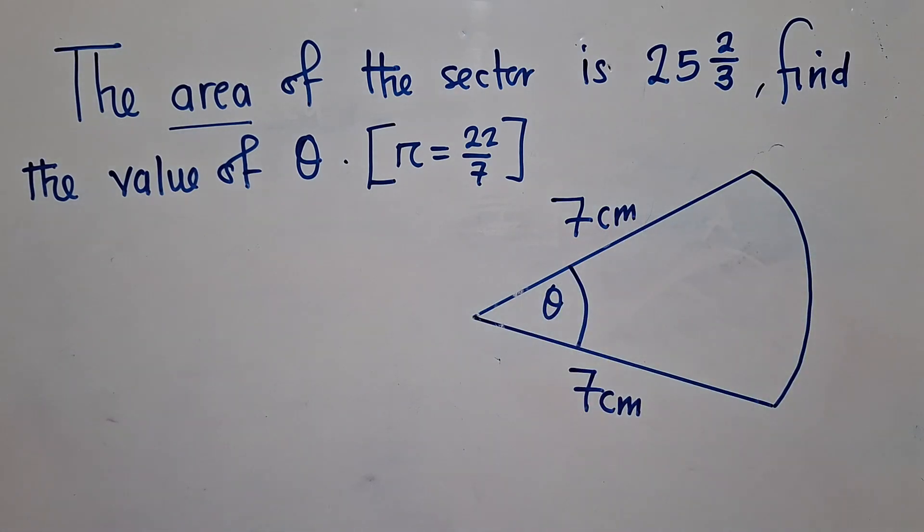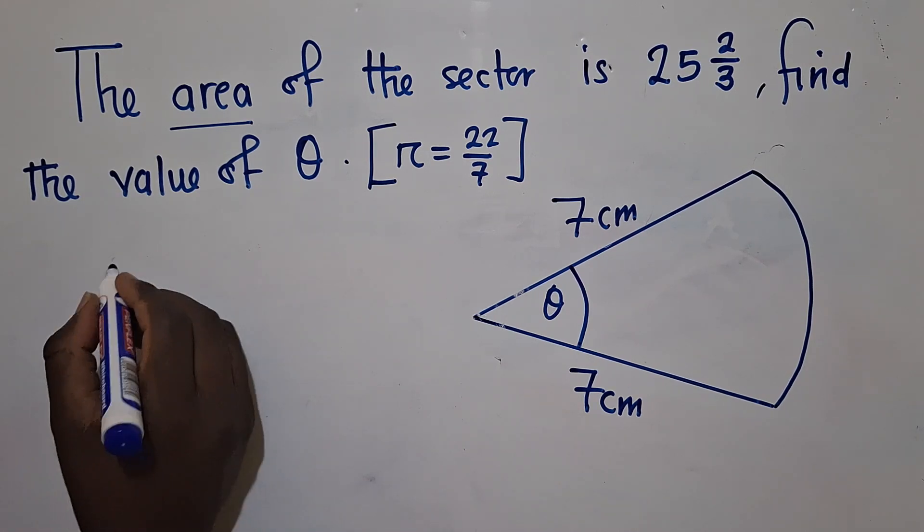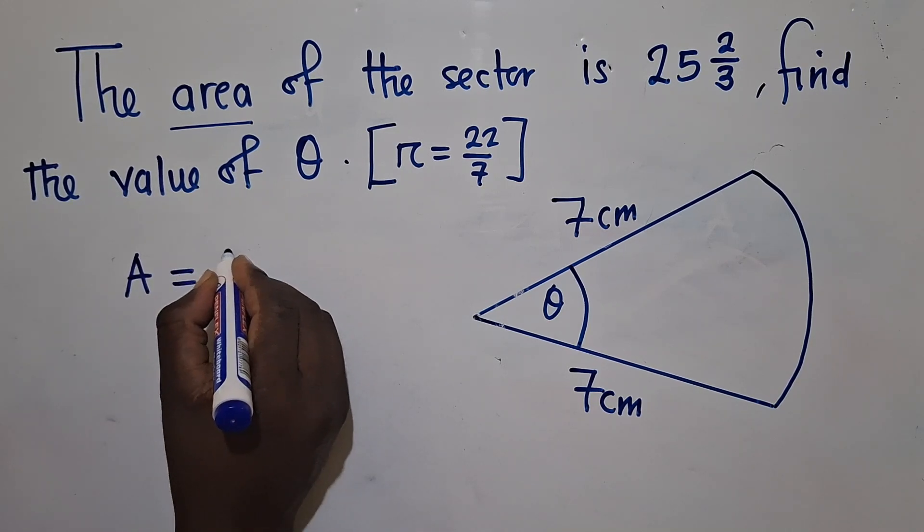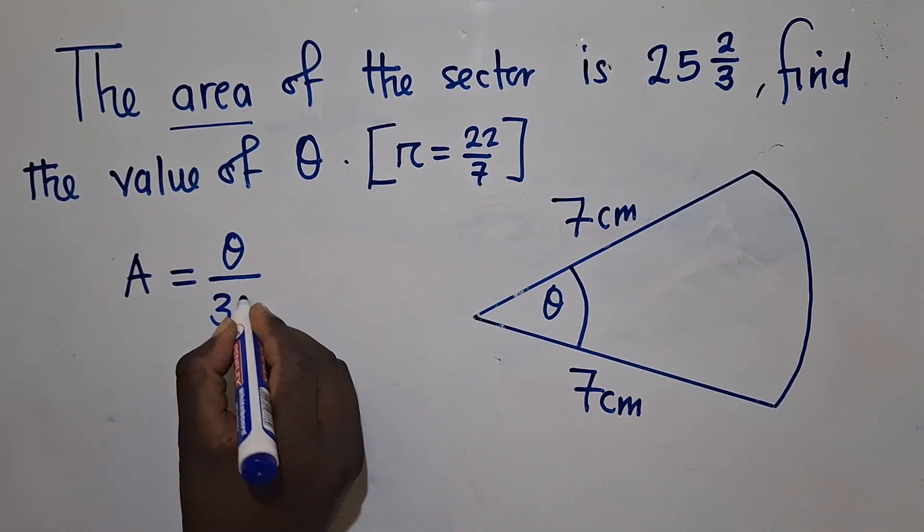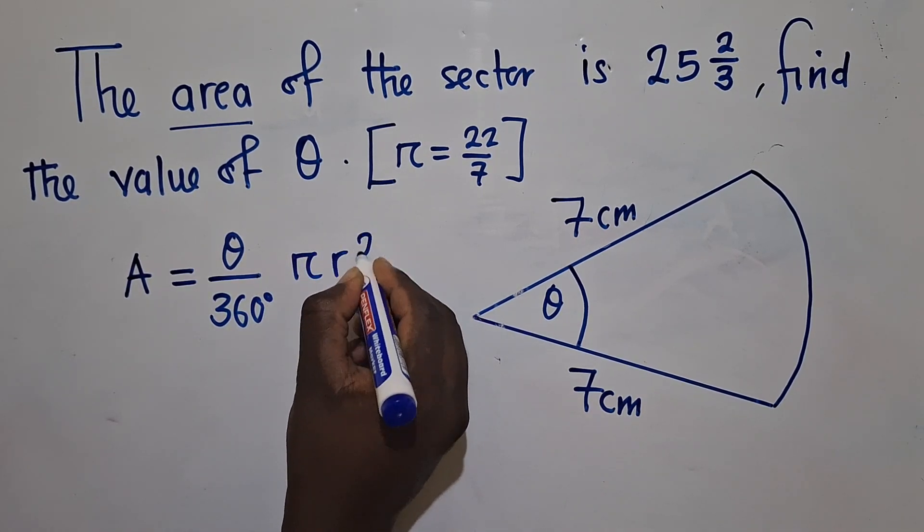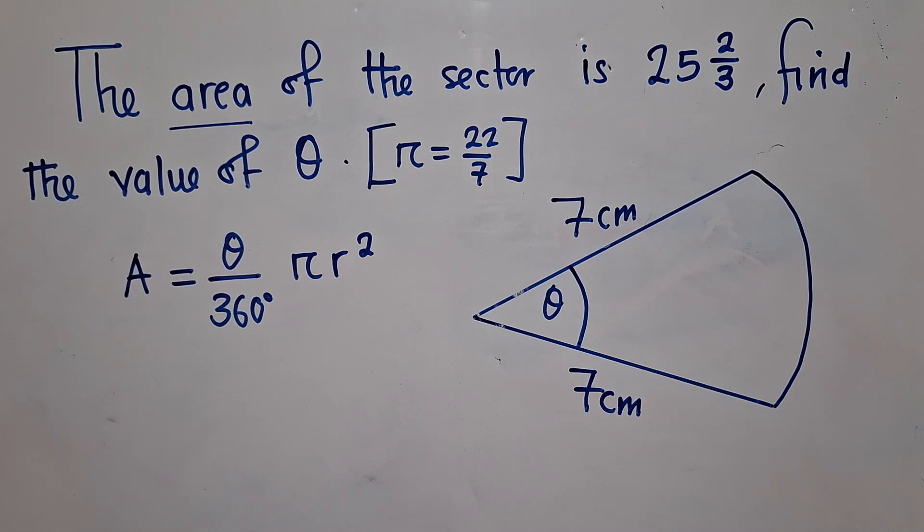Here, the first thing before you even start thinking about doing the calculations, just write the formula. So the formula for finding area of a sector is θ/360° times πr². This is the formula and this is what must be coming in your mind.